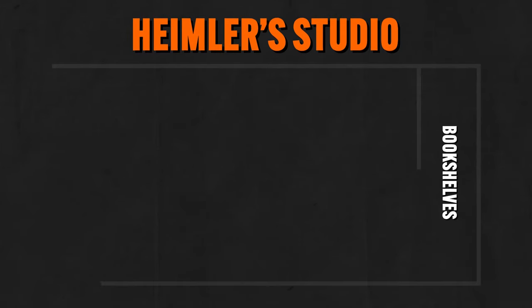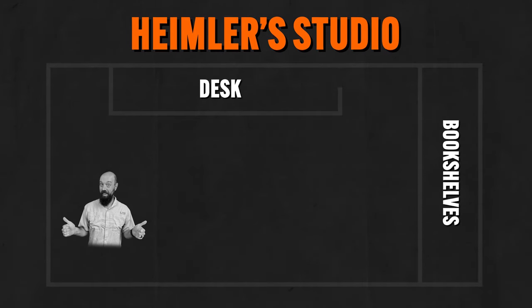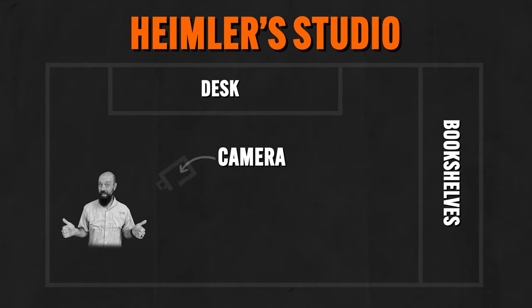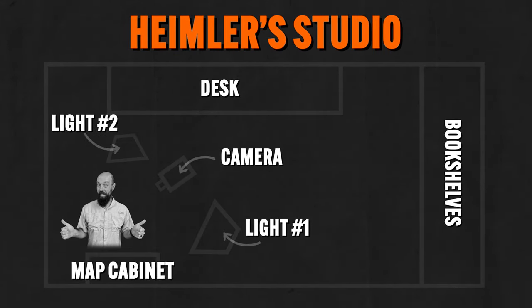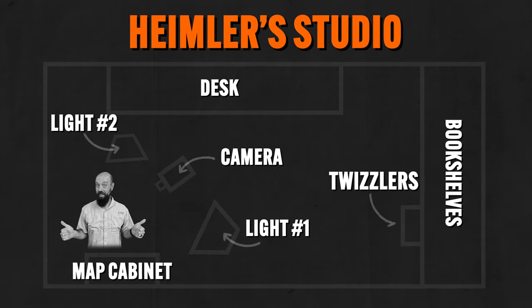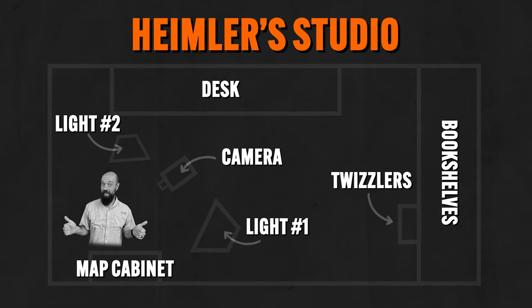For example, here's a basic outline of my studio where I'm filming this right now. I have my desk here, a camera here, lights, a map cabinet, and the drawer where I keep all my Twizzlers — don't tell my kids. Now you're looking at the spatial arrangement of this room, like where things are located in my space.